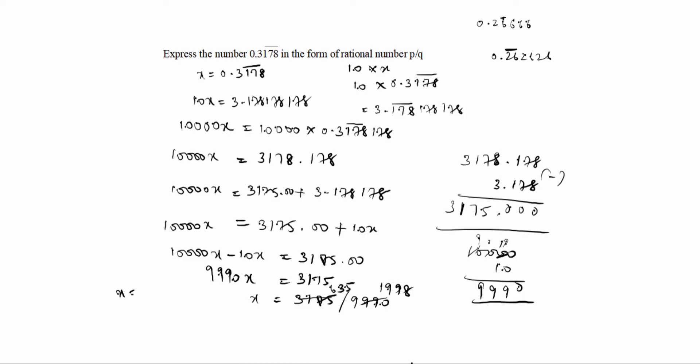X value is equal to 635 divided by 1998. This is the answer. You have to divide this number. It comes 0.3178 bar. You have to cross verify. Thanks for watching this video.